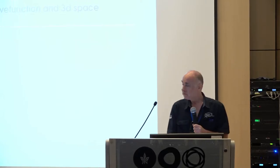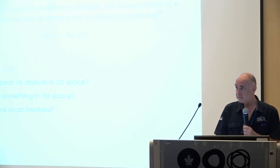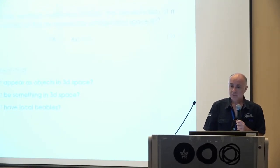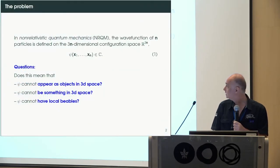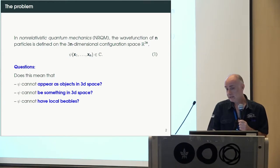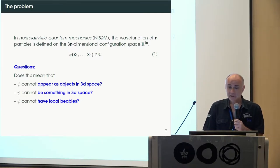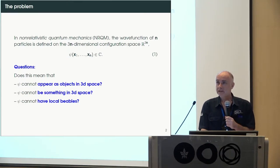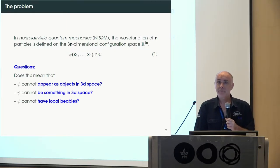I'd like to talk about the relation between the wave function and 3D space. There are some problems that were invoked especially today: in non-relativistic quantum mechanics, the wave function of m particles is defined on a 3n-dimensional space. The questions that can be asked are whether the wave function can appear as objects on 3D space, and whether it can have local beables — a question raised by Tim and Valia and others.